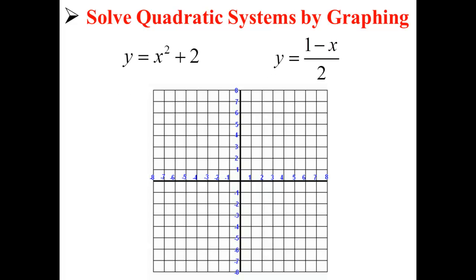Now let's graph these on the coordinate plane. First, we have a parabola that opens upwards and has a y-intercept of 2. The second equation is the equation of a line. Because our quadratic equations in this quadratic system do not have an intersection on the graph, this quadratic system has no solutions.